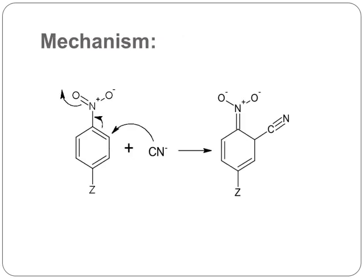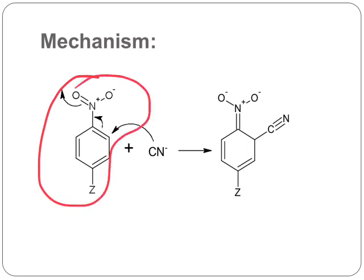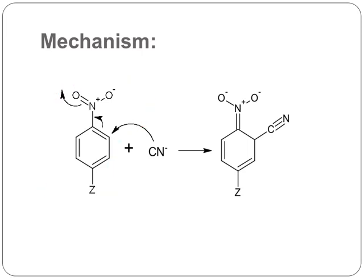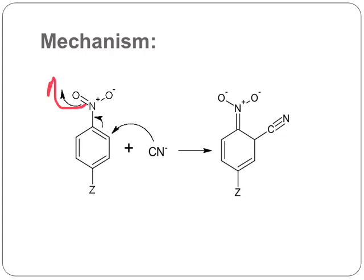Let us discuss the mechanism. Using the elaborate structure of the aromatic nitro compound, the first step is nucleophilic attack of the cyanide ion at the ortho position with respect to the nitro group. When cyanide attacks, the pi electrons shift between carbon and nitrogen to form a double bond, and the oxygen acquires a negative charge, giving us this intermediate.